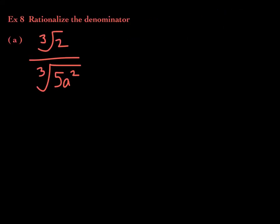We have the cube root of 2 divided by the cube root of 5a². The radical in the numerator doesn't bother us — it's the radical in the denominator we care about. The index is 3, so think about perfect cubes. The question becomes: what will I multiply by? We know it will be the cube root of something.